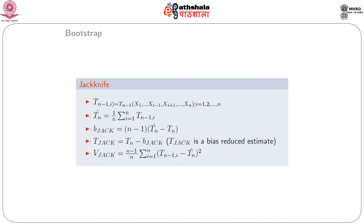We use a technique called jackknife. In jackknife, we compute the statistic repeatedly by deleting the i-th observation, where i runs from 1 to n. We compute n statistics and call the i-th one t_{n-1,i}. Then we take the average and call it t_n-hat. We get an estimate of the bias of the jackknife sample, which is (n-1)(t_n-hat minus t_n), where t_n is the sample statistic. Finally, we compute the jackknife estimator, which is t_n minus b_jack. This produces a bias-reduced estimator of theta. The jackknife variance is v_jack = ((n-1)/n) * sum_{i=1}^{n} (t_{n-1,i} - t_n-hat)^2.